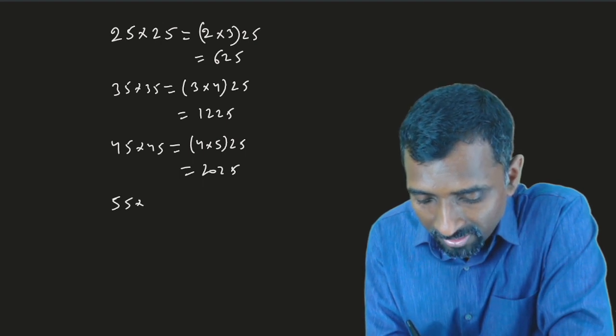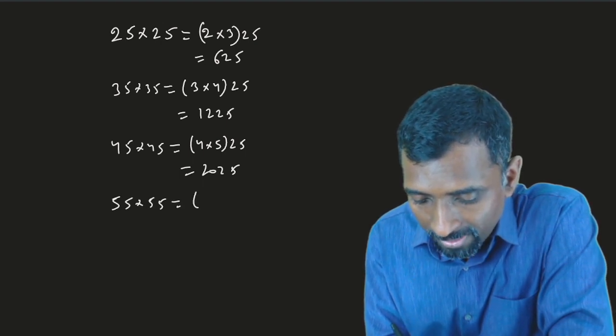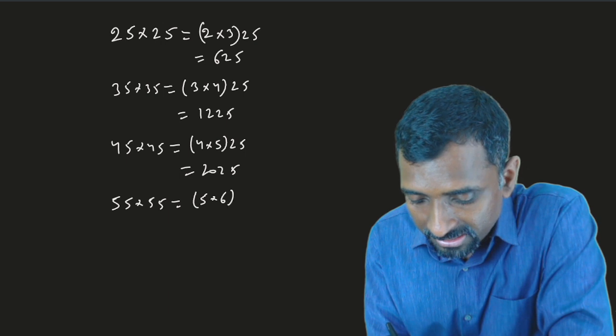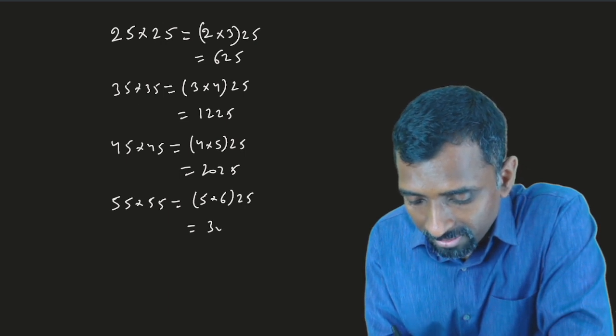If I say 55 multiply 55, 5 multiply the next digit 6, then 25. It is 3025.